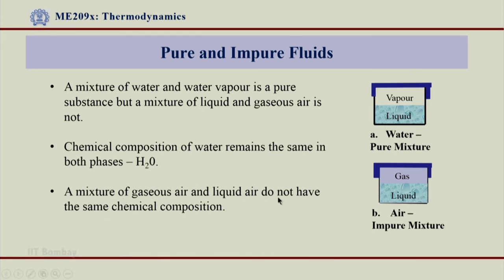For a two-phase mixture of air, the chemical composition of gaseous air will be different from that of liquid air. If we start from 100% gaseous air and reduce the temperature, the higher boiling components like CO2 will first condense into the liquid phase, while lower boiling components like oxygen and nitrogen remain in the gaseous phase. So the gas will have more oxygen and nitrogen while the liquid will have more CO2 — making the chemical composition of the liquid different from that of the gas, and thus this mixture is an impure fluid.